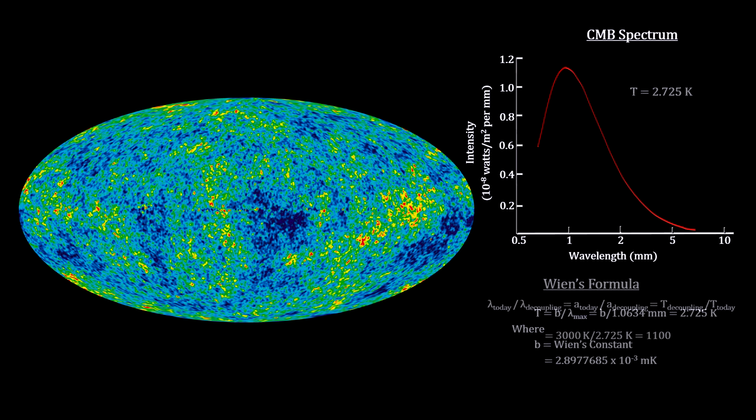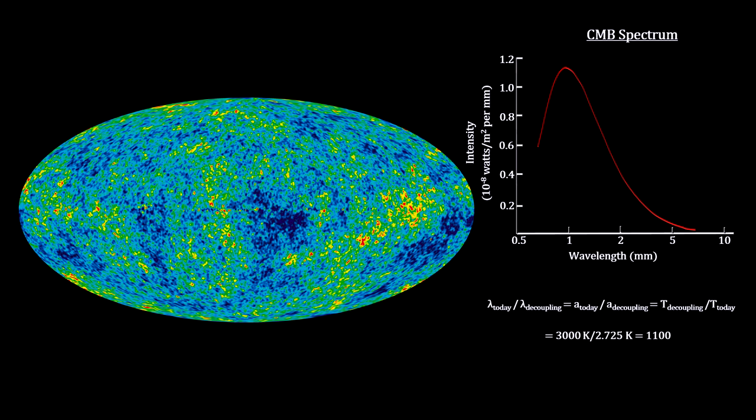We know that at decoupling it was 3,000 degrees. So the temperature has been reduced by a factor of 1,100. We also know that the ratio of the current temperature to the temperature at decoupling is equal to the ratio of the current scale factor to the scale factor at decoupling. So the universe has expanded by a factor of 1,100 times since decoupling.